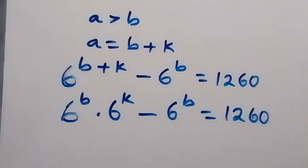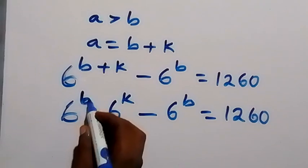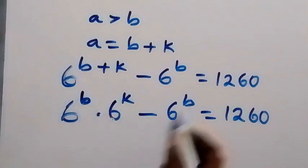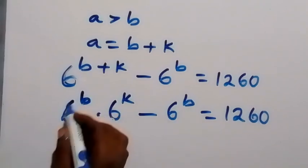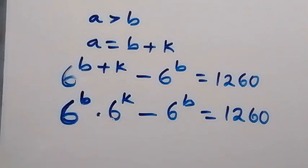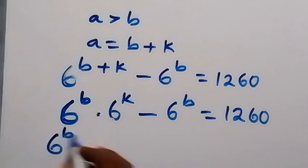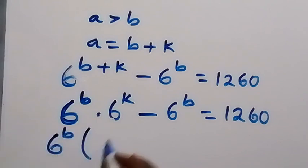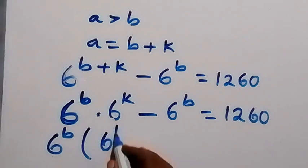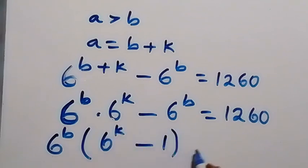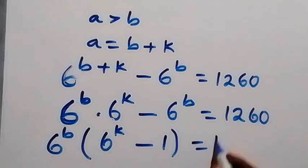From here we factor out 6 raised to power b, so we have 6 raised to power b, multiplied by the bracket (6 raised to power k minus 1), which equals 1260.